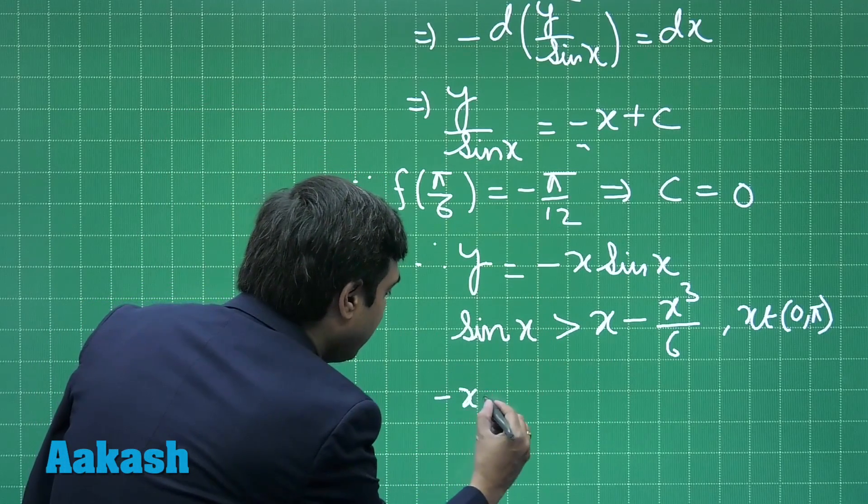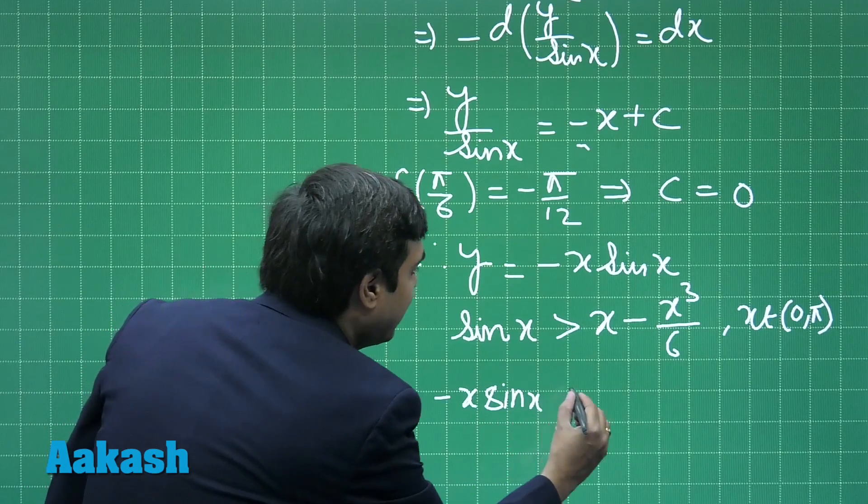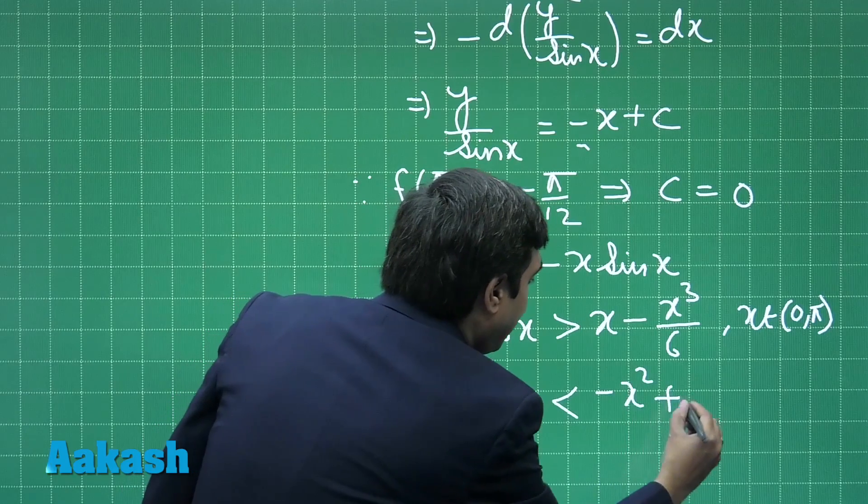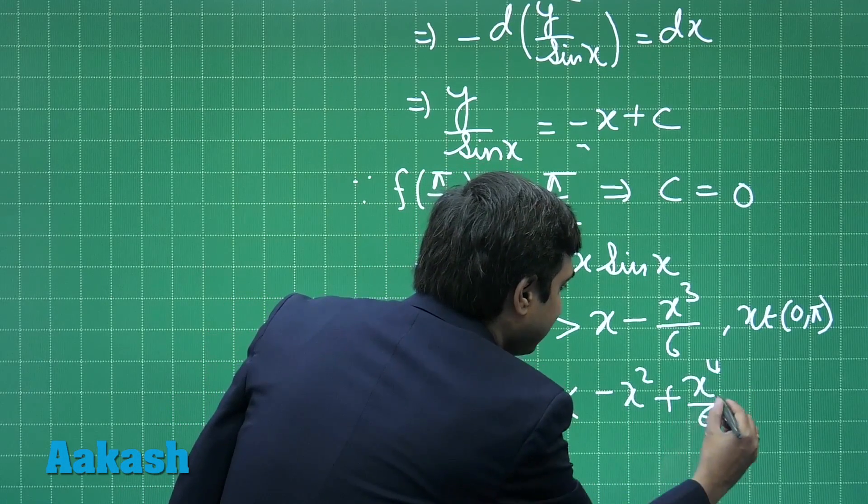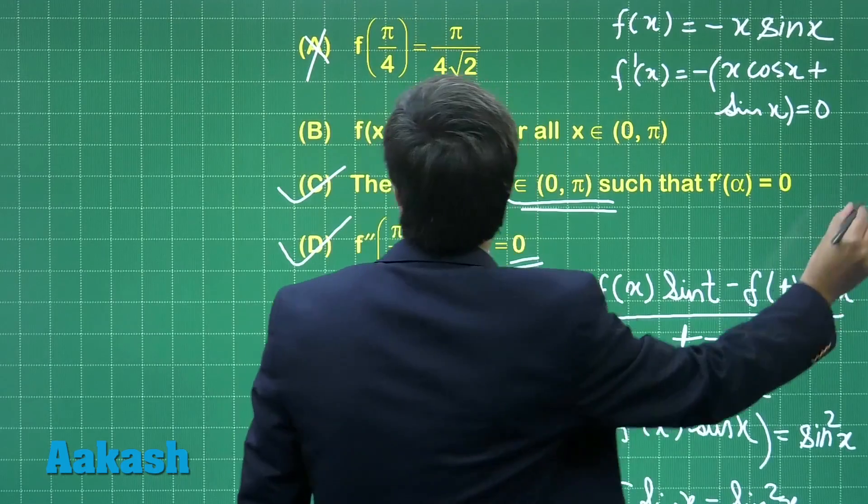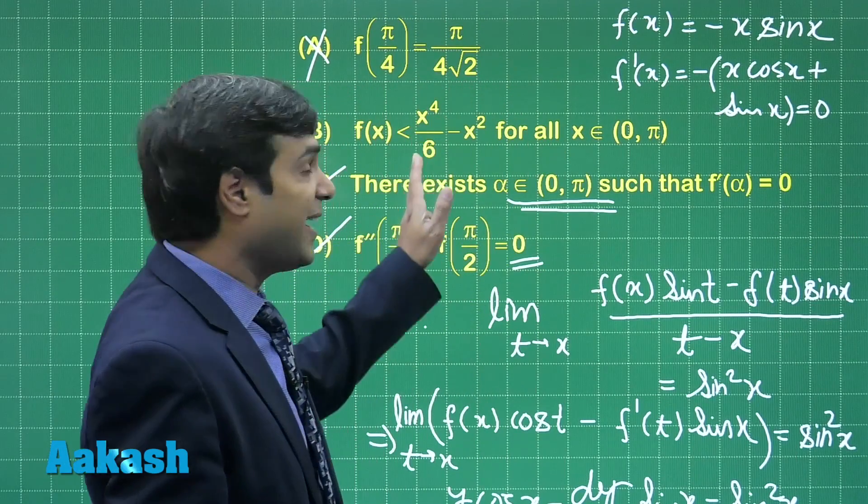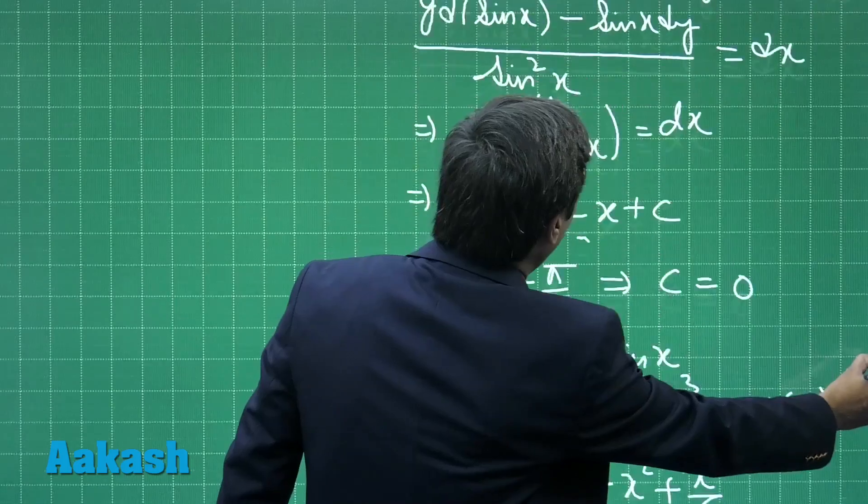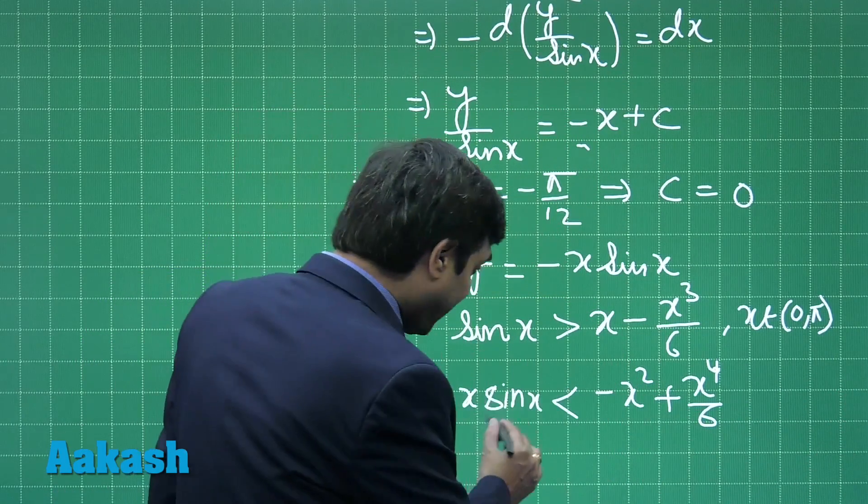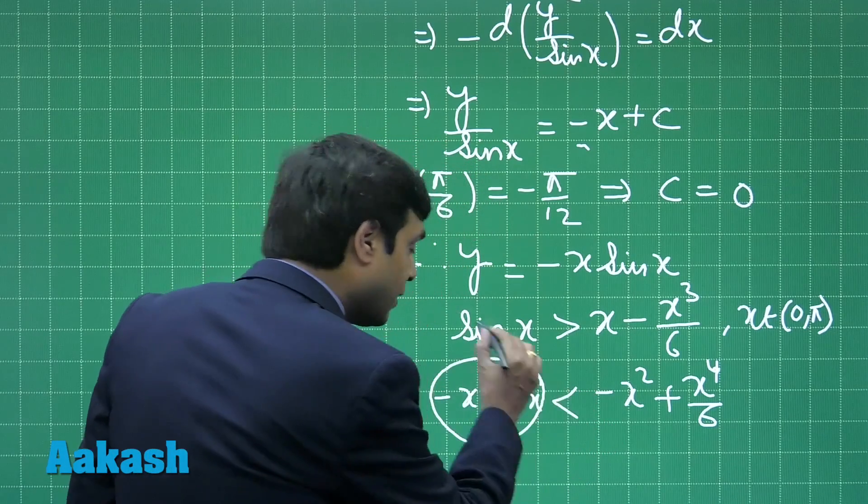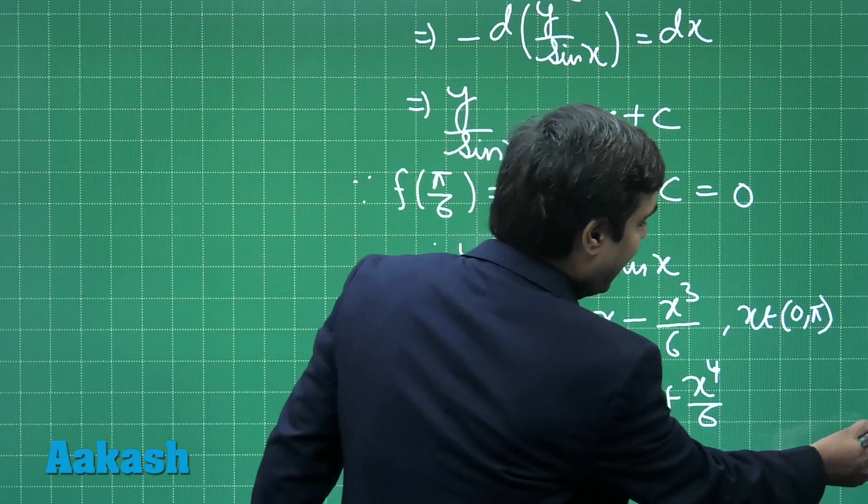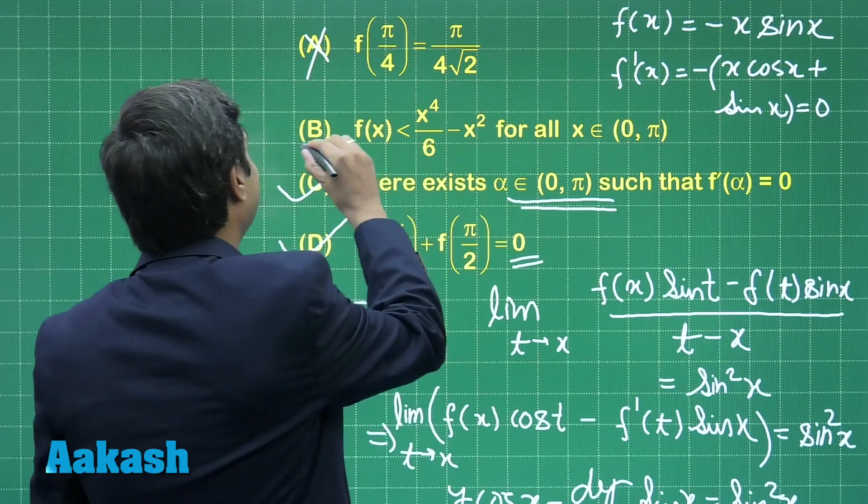Multiplying both sides with -x, we have -x sin x < -x² + x⁴/6. Correct. Now look at the option given: it says f(x) < x⁴/6 - x² for all x in the interval (0, π), the same term as we obtained. -x sin x which is f(x), correct.